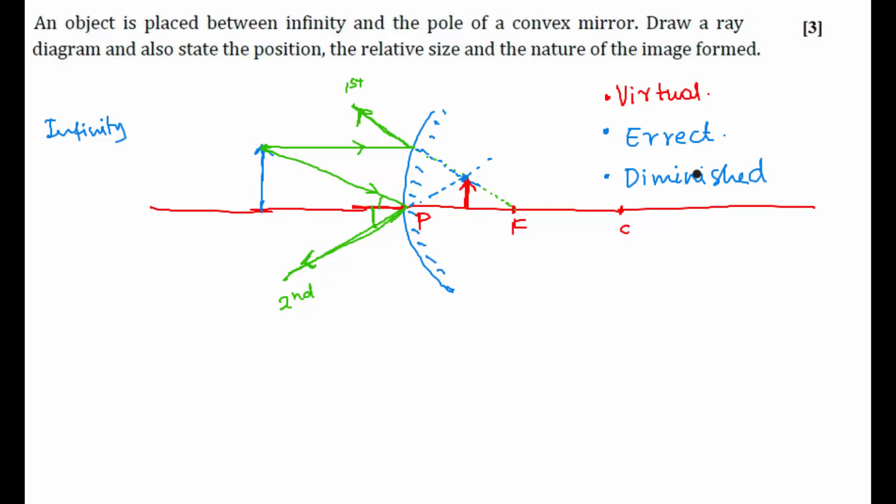And where it is forming? It is forming between pole and focus. Now what is he asking? State the position. Position is nothing but it is between pole and focus always. And the relative size is diminished. And the nature of the image formed is virtual and erect. So these are the four important points which he is asking us in the question. So image is forming between pole and focus.